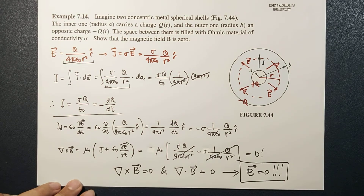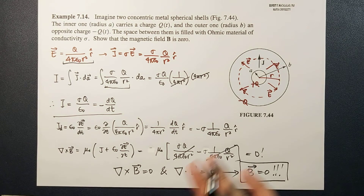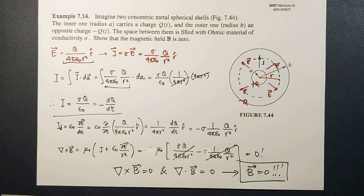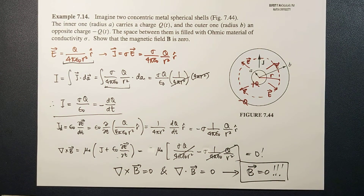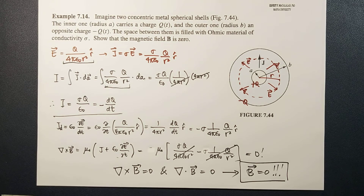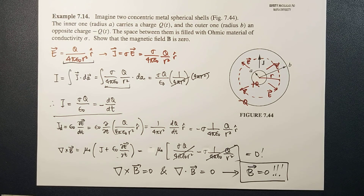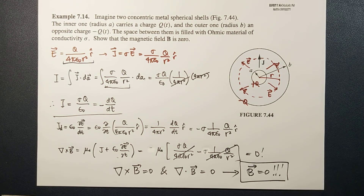That's it — a simple derivation proving that if you have this configuration where the current density is radially outward, there is no possible way that the magnetic field will be produced. Therefore the magnetic field is zero. Thank you very much, I hope you learned something today. Thank you for watching and I'll see you guys next time.